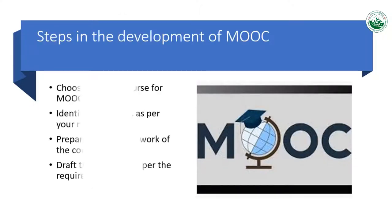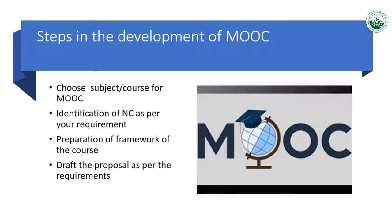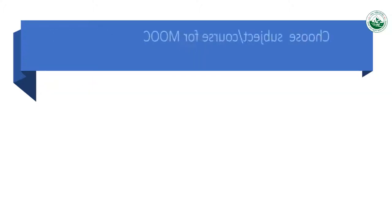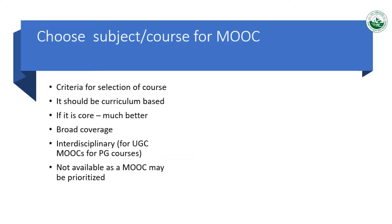So what are the steps in the development of a MOOC? First, choose a subject or a course for the MOOC. Second, identification of a national coordinator as per your requirement. Third, prepare the framework of the course. Fourth, draft the proposal as per the requirements.